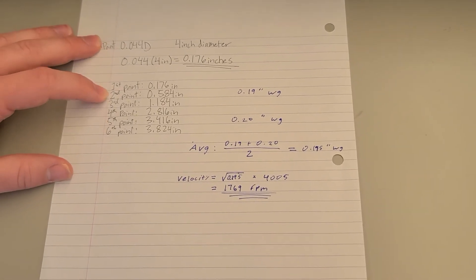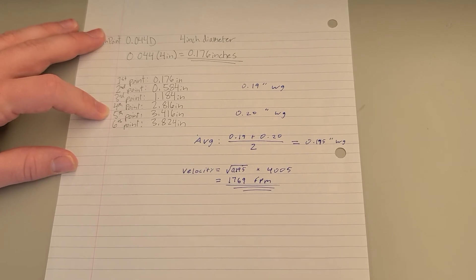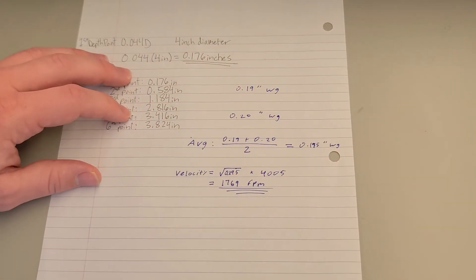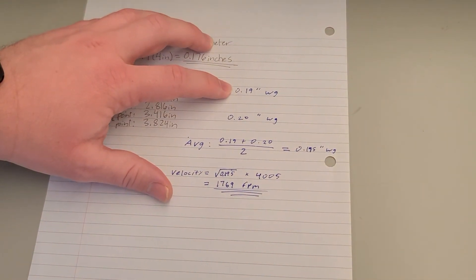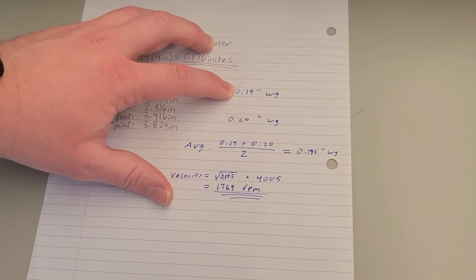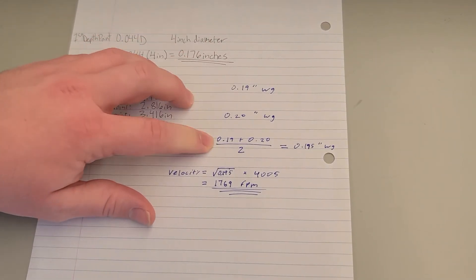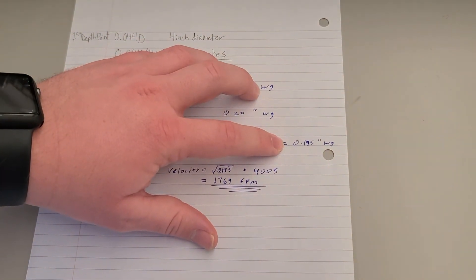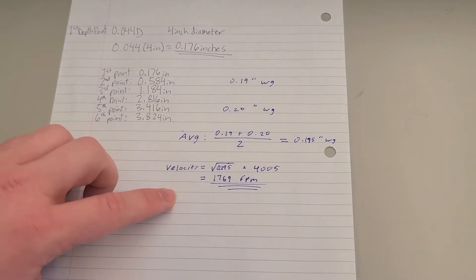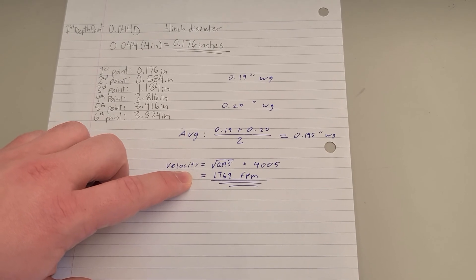Here again, we're just using the second and fifth point of the velocity traverse to show how to average those values. What we got was 0.19 inches of water gauge and 0.20 inches of water gauge. Here, we just average those together to get 0.195 inches of water gauge.